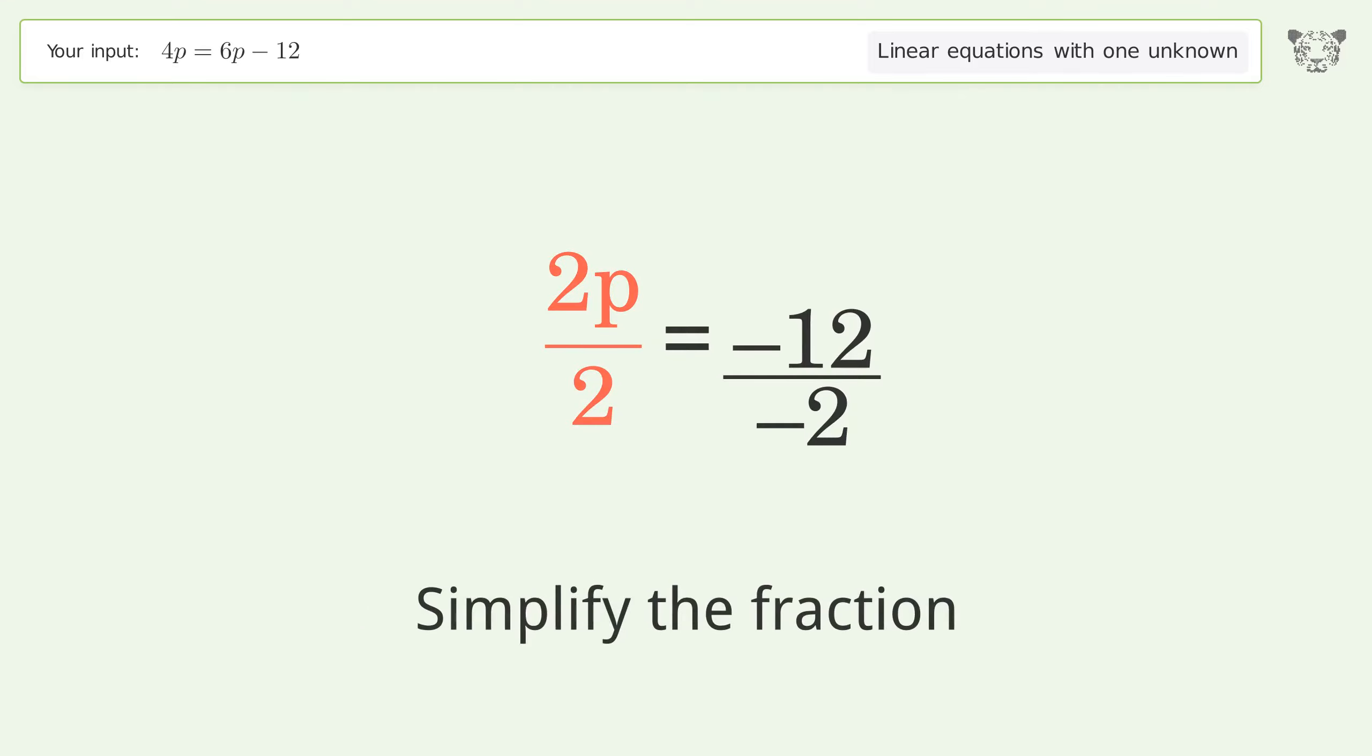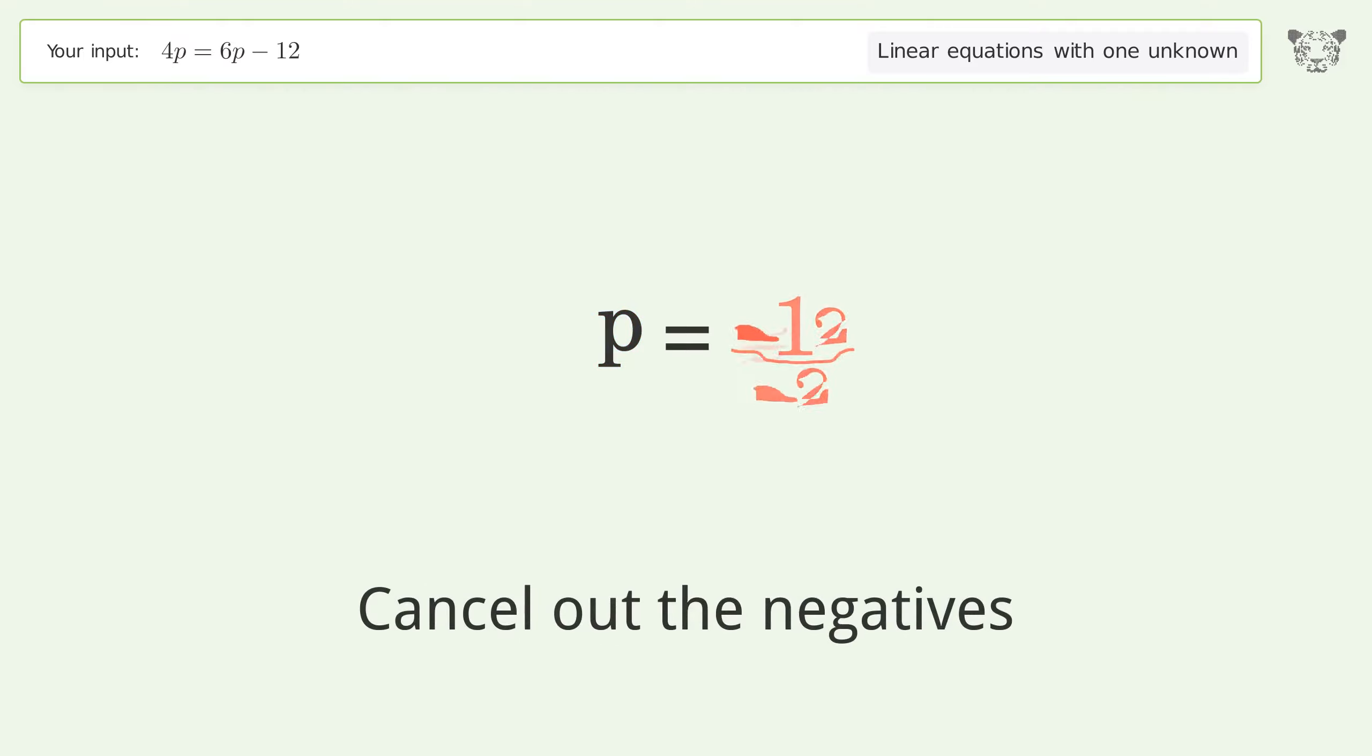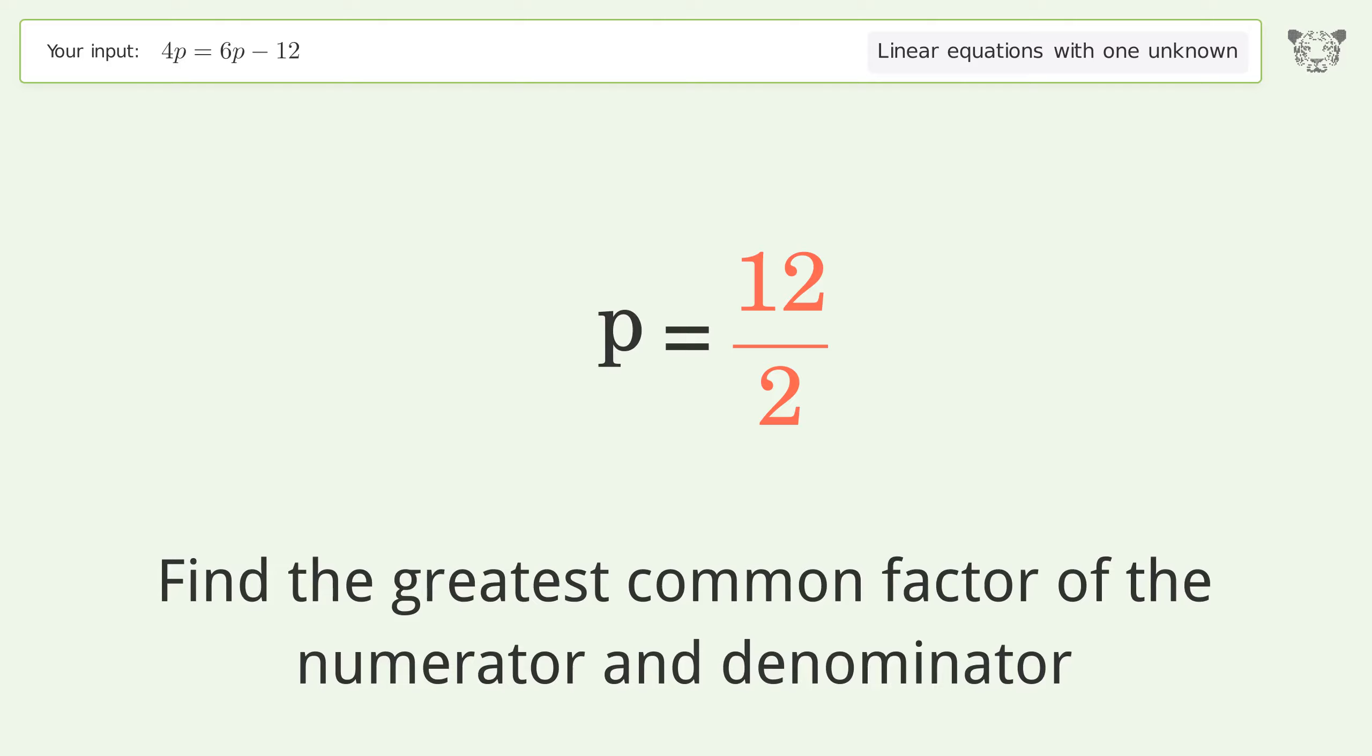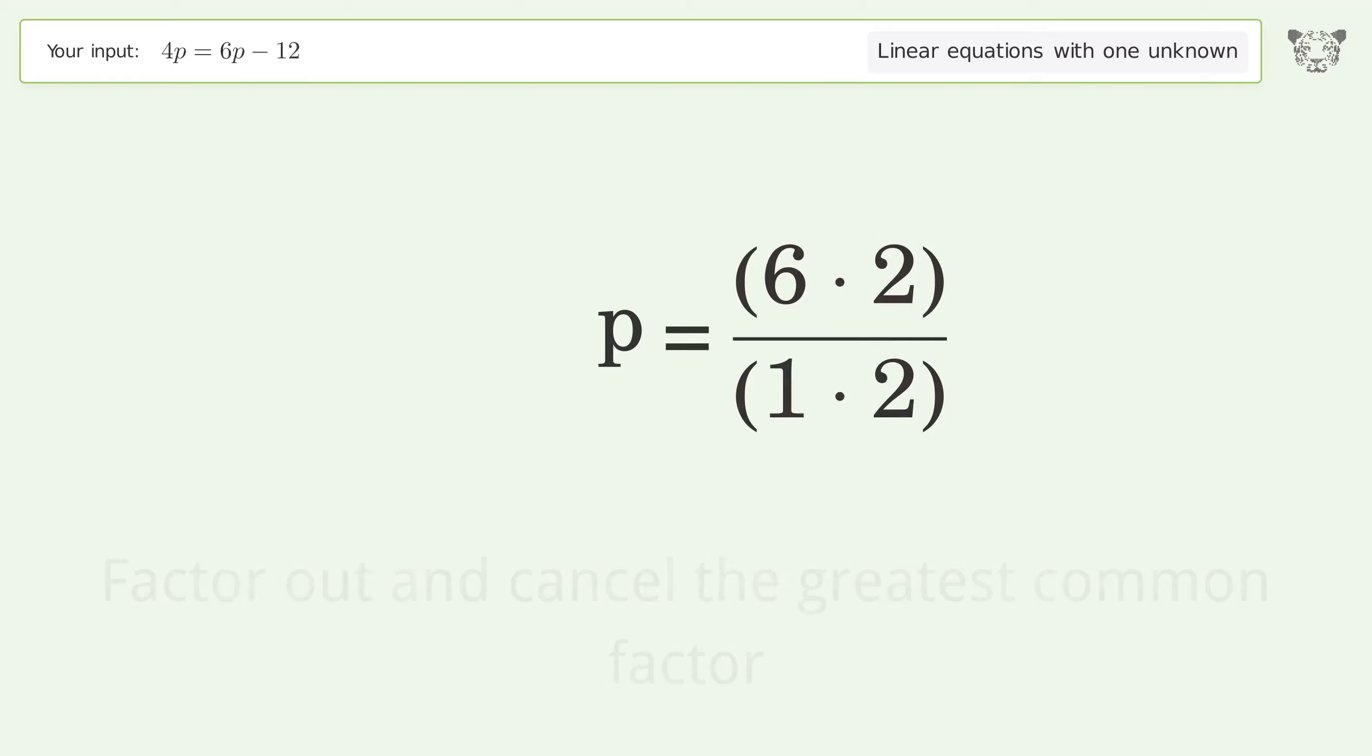Simplify the fraction. Cancel out the negatives. Find the greatest common factor of the numerator and denominator. Factor out and cancel the greatest common factor.